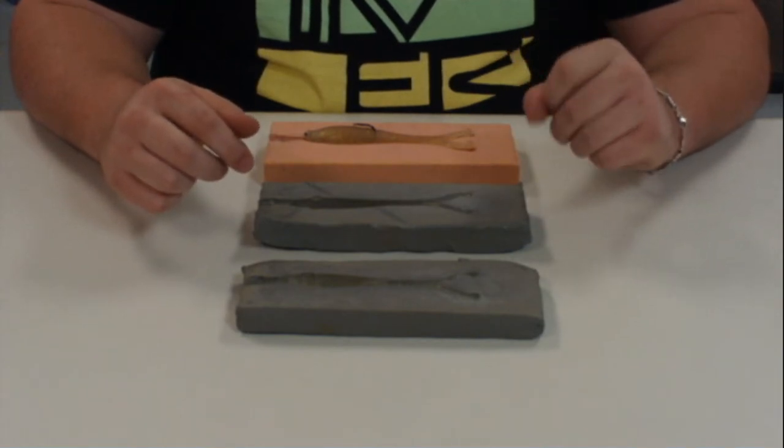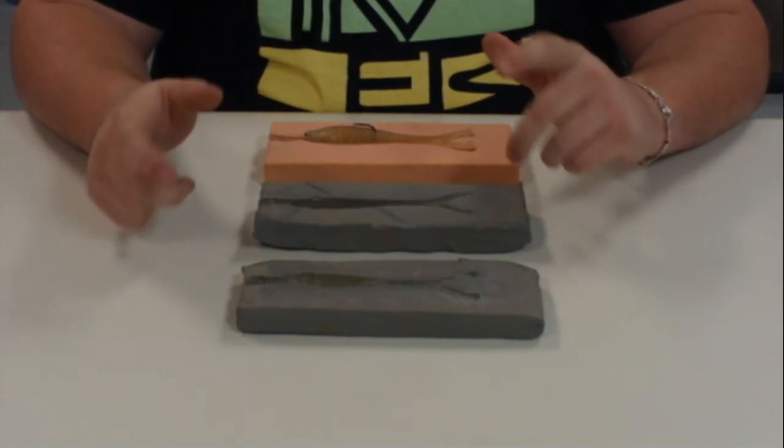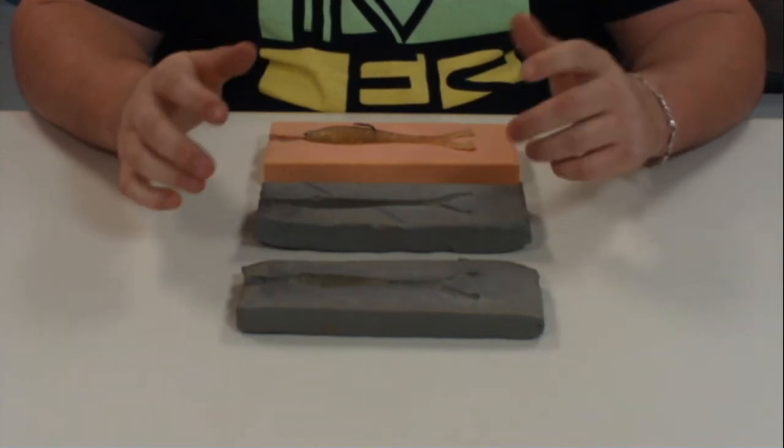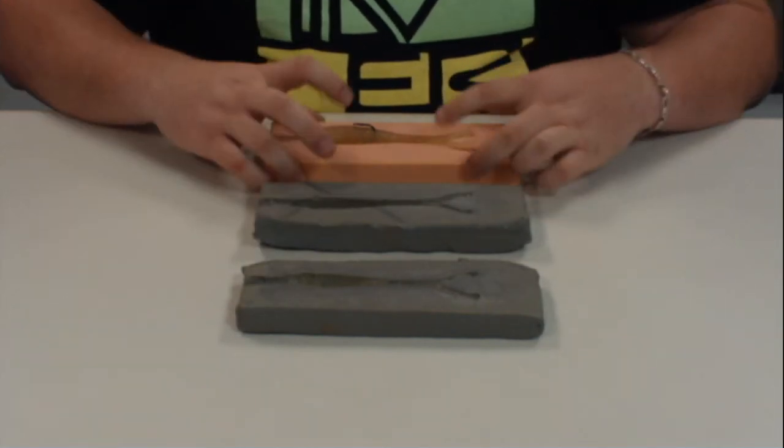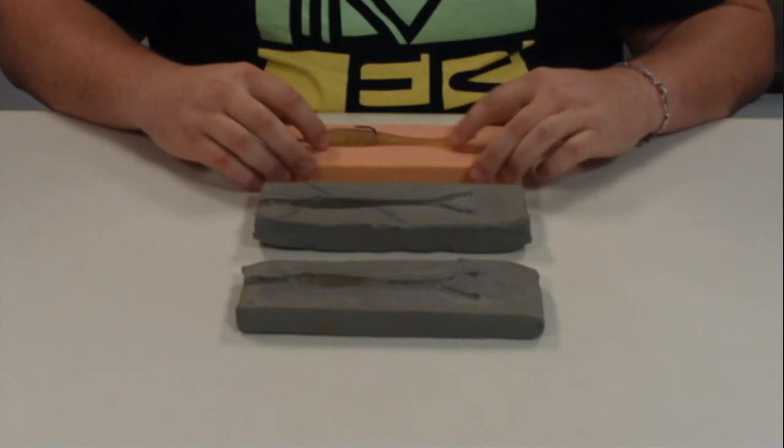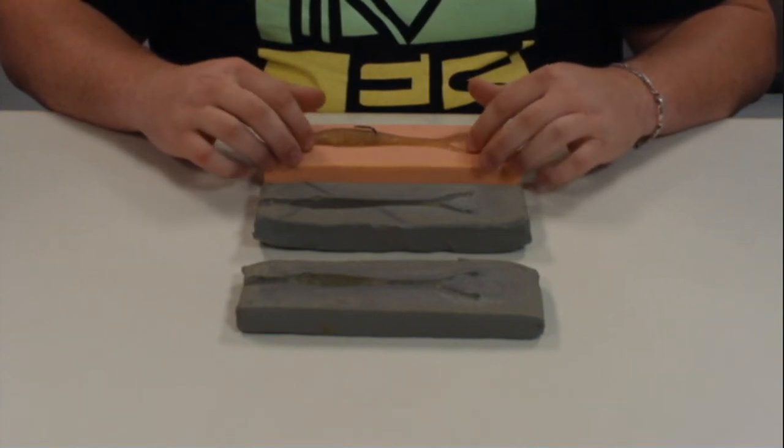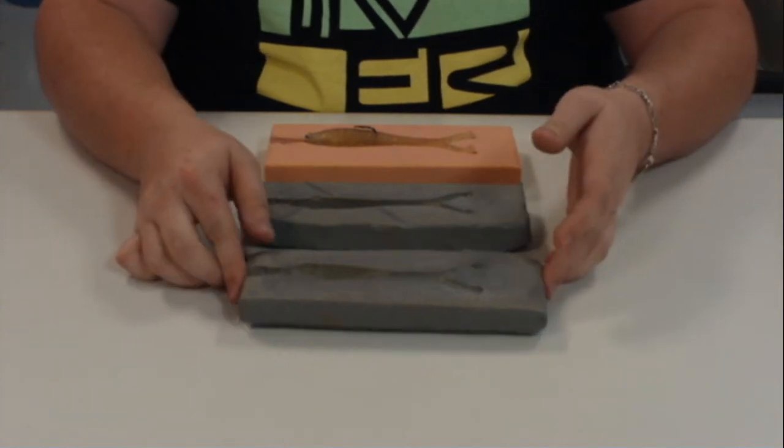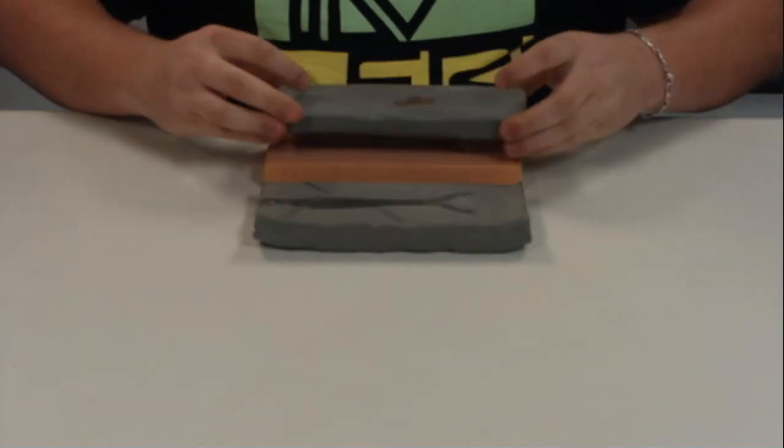The next step in the mold building process is to pour our hard negatives, which we're going to be able to pour our plastic into to make a full working prototype. The first step is to take our silicone mold. Usually we'll try to use a wood carving because the wood carving will let us separate the two parts without destroying our prototype.